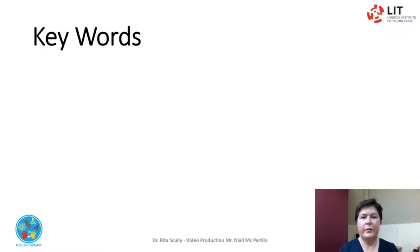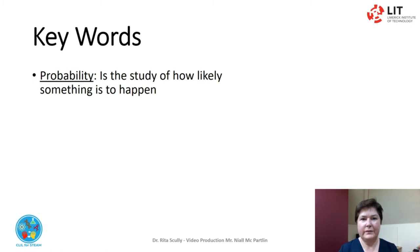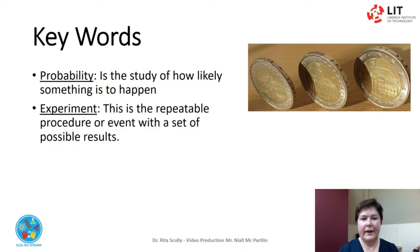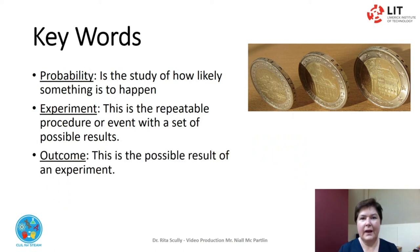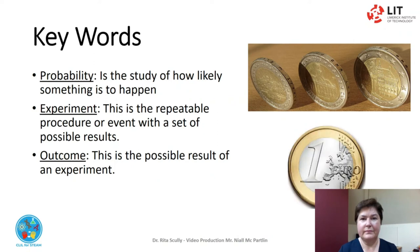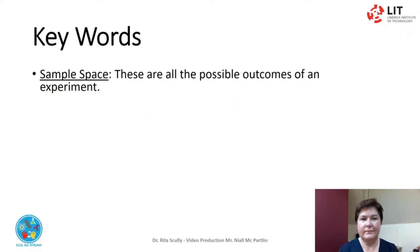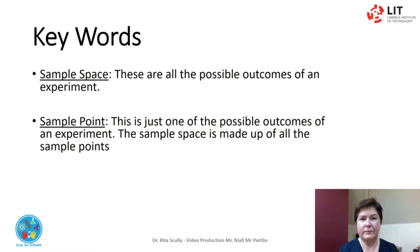Keywords. There are some keywords that will be used in this video on probability. Probability is the study of how likely something is to happen. Experiment: this is a repeatable procedure or event with a set of possible results. Outcome: this is the possible results of an experiment. Sample space: these are all the possible outcomes of an experiment. Sample point: this is just one of the possible outcomes of an experiment.